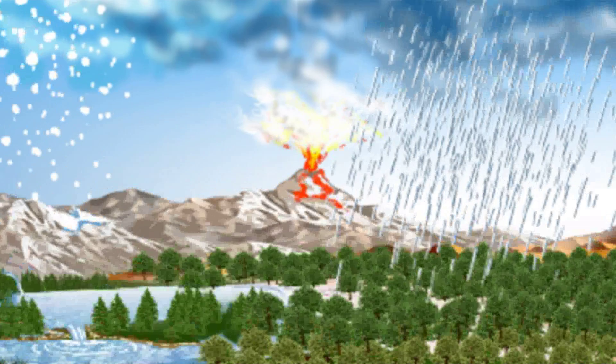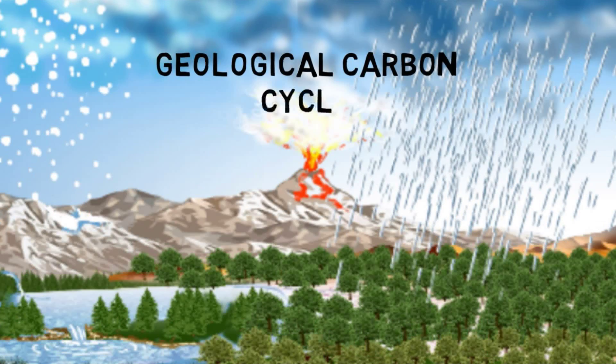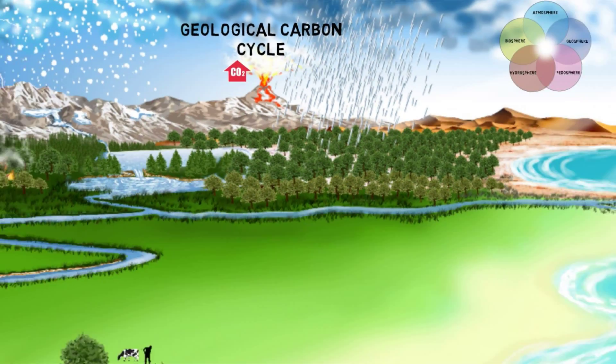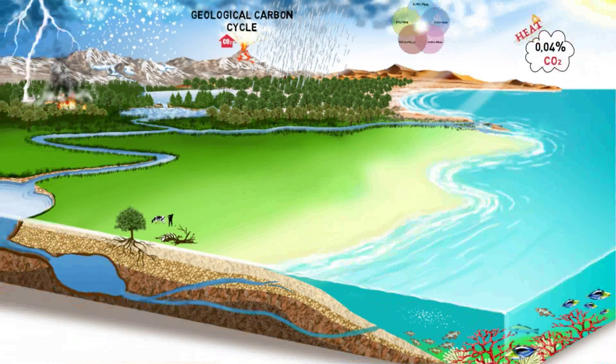The geological carbon cycle spans over millions of years and relates to the movement of carbonate compounds underneath the Earth's surface, eventually leading to the remittance of carbon dioxide back into the atmosphere via volcanic eruptions.